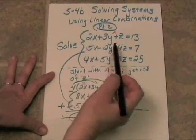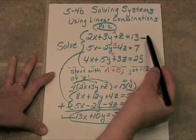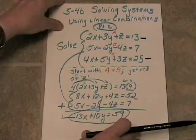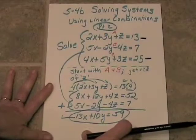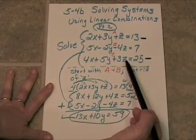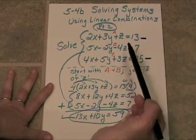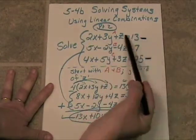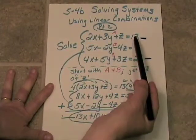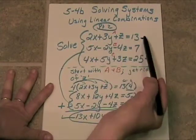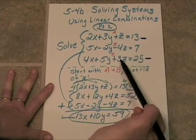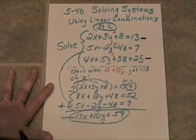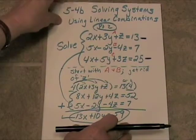So now I'm going to take A and C and work with those two. Once again, I think I'll try and get rid of the z. Here we have one z, here we have three z. If I multiply through here by negative three and then add A to C, the z's will drop out, and I'll have yet another equation in two variables. So let's go ahead and do that.